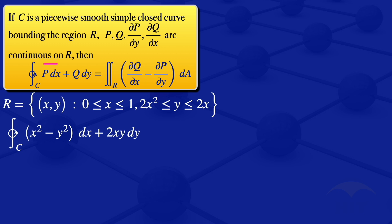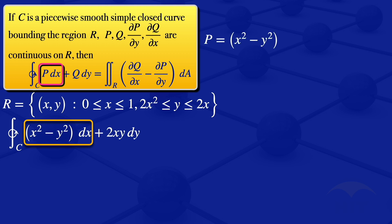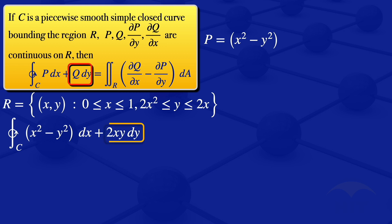Here we have P dx, and comparing with the given line integral, the coefficient of dx is x squared minus y squared. So P equals x squared minus y squared. Looking at Q dy, the coefficient of dy is 2xy, so Q equals 2xy.